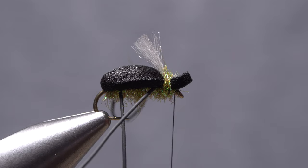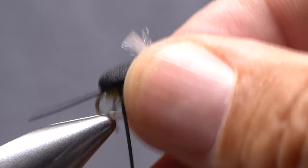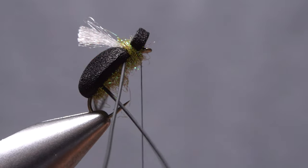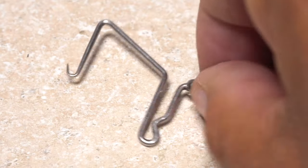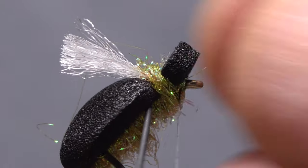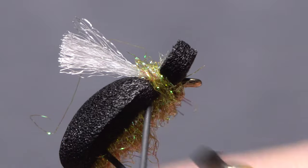Reorienting the fly in the vise so the eye's in a more horizontal orientation will make it much easier to whip finish. Pick up your whip finish tool and use it to do a four or five turn whip finish, seat the knot well and snip or cut your tying thread free.